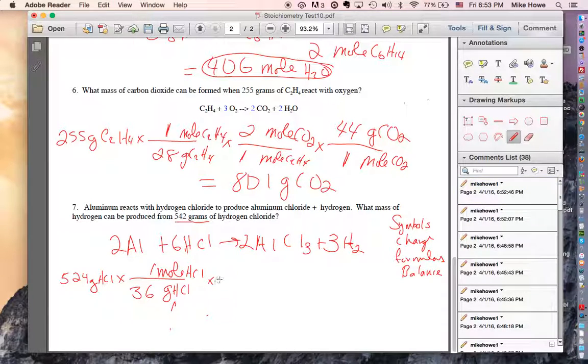The second step in doing these problems is to use the mole ratio. So we're going to put moles of HCl on the bottom. And moles what we're looking for on top. What are we looking for? Let's see. What mass of hydrogen? So we're going to have moles of hydrogen on top. Mass is measured in grams. But before we can find grams, we have to find moles. So we're going to put a 3 in front of the hydrogen and a 6 in front of the HCl.